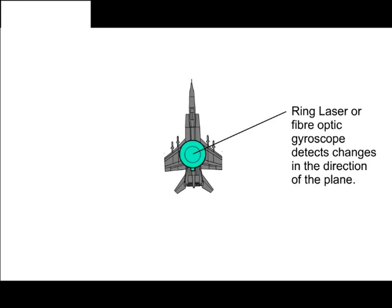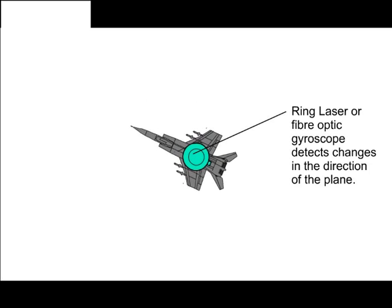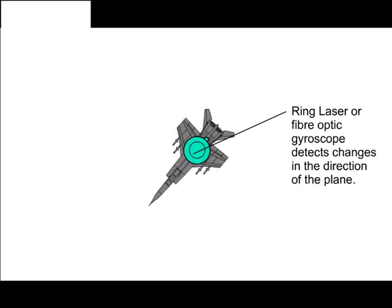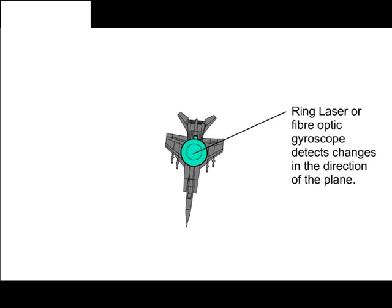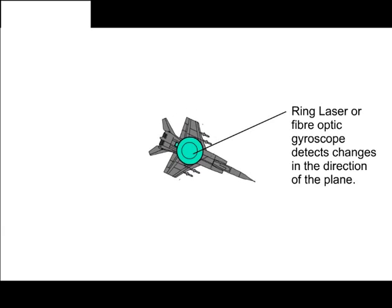This Sagnac effect is used by airlines for their compass directions. As the plane turns, the change in the fringes are translated into a change in the direction of the plane, that then registers on the cockpit compass.